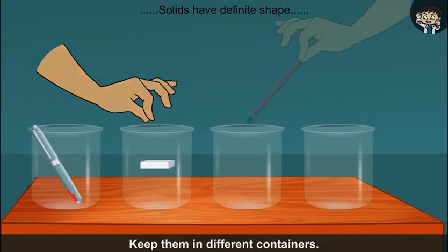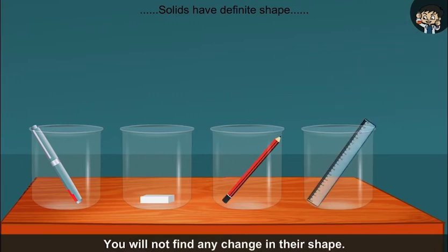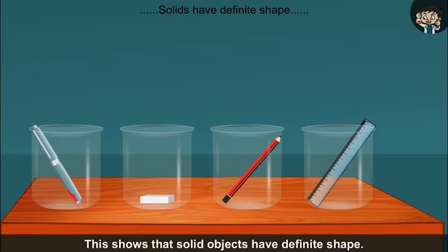Keep them in different containers. You will not find any change in their shape. This shows that solid objects have definite shape.